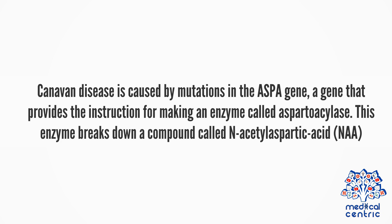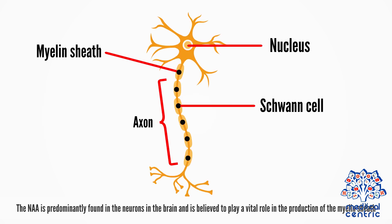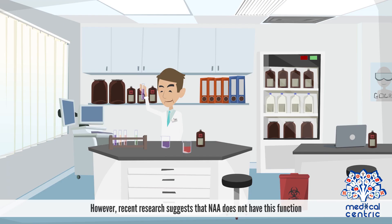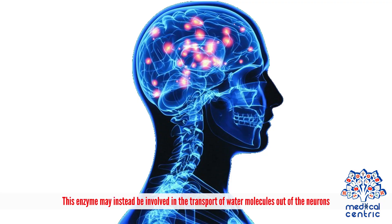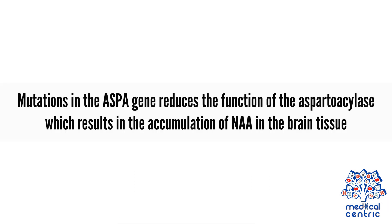Canavan disease is caused by mutations in the ASPA gene, a gene that provides the instructions for making an enzyme called aspartoacylase. This enzyme breaks down a compound called N-acetyl-aspartic acid, or NAA. NAA is predominantly found in the neurons in the brain and is believed to play a vital role in the production of the myelin sheath. However, recent research suggests that NAA may instead be involved in the transport of water molecules out of the neurons. Mutations in the ASPA gene reduce the function of aspartoacylase, resulting in the accumulation of NAA in the brain tissue.